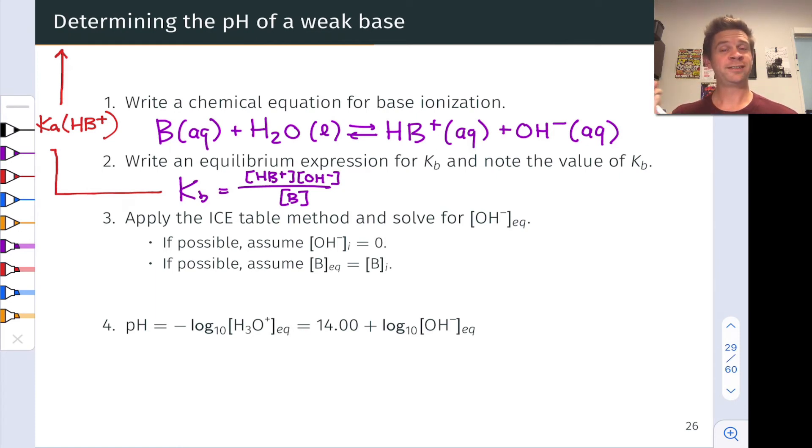You can still determine the pH of a weak base solution even just with Ka for the conjugate acid by applying the conjugate seesaw before you engage in this process. And likewise, if you know Kb for the conjugate base, you can find the pH of a weak acid solution by applying the conjugate seesaw first.